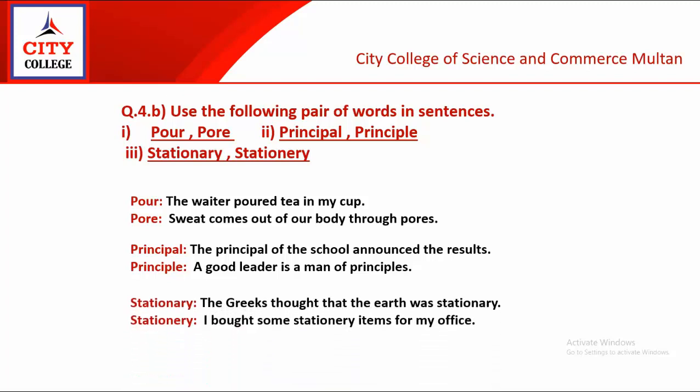Next pair: stationary and stationery. Jaise static ka matlab hota hai motionless, not moving, aur static mein S-T-A-T-I-C hota hai, usi tarah jis 'stationary' mein N-A-R-Y aayega uska matlab hoga motionless. Aur jis tarah pen aur pencil mein E aata hai, usi tarah jis 'stationery' mein E aayega woh pen, pencil waghaira hogi. Possible sentences: The Greeks thought that the earth was stationary. I bought some stationery items for my office.